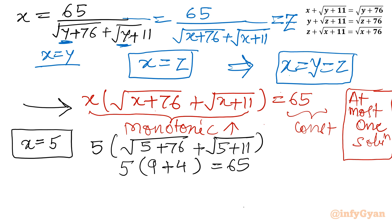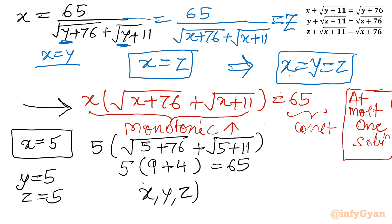Similarly, there are three equations. From the other two equations, y = 5 and z = 5 as well, since they are equal to each other. So our triplet is (5, 5, 5).